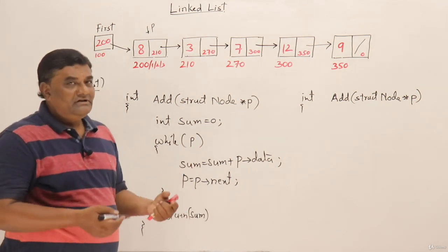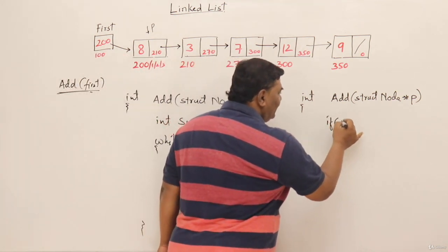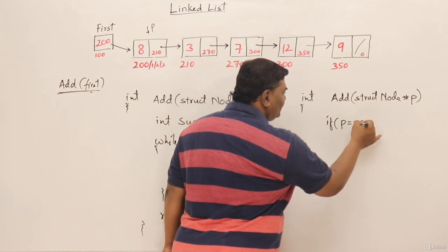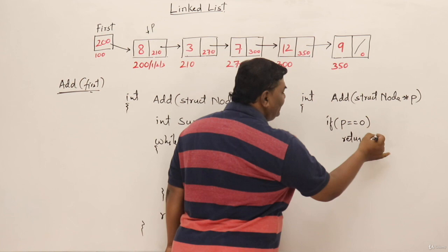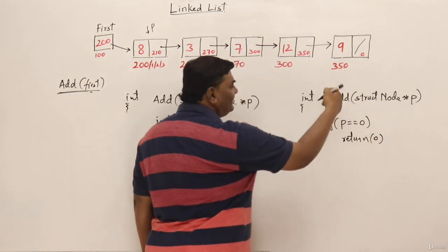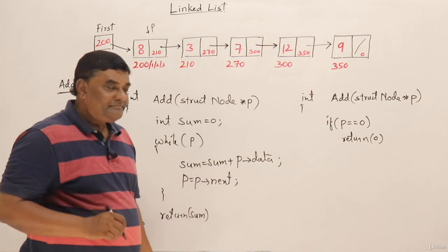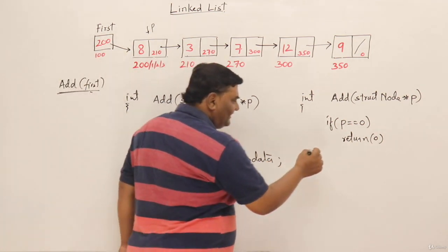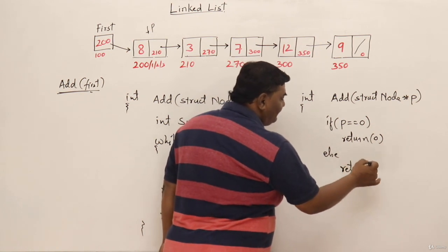So here I will write the termination condition: if P is equal to zero, that is null, then return zero. If it is null means we don't have to add anything. If P is null means nothing is there, there is no element, so zero.